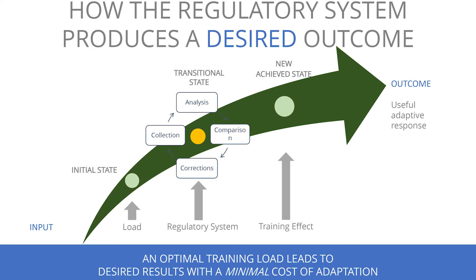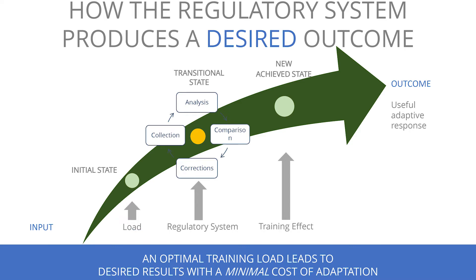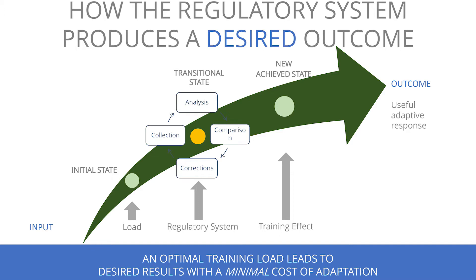If we measure our readiness — our current functional state — we get our initial state before training; this is our starting point. When I do some bench press, this is the load — I am applying a stressor intervention to my body. My neural system collects information from receptors and different sensors in the body and tries to analyze this information based on previous experience, so the regulatory system creates a response to this particular training load.